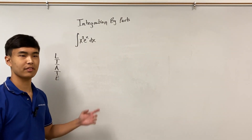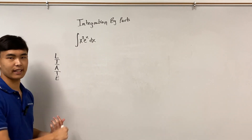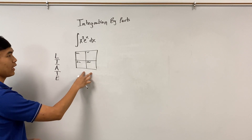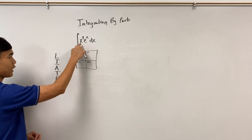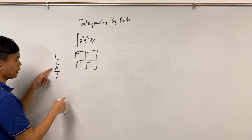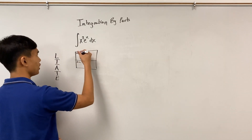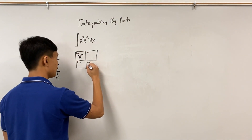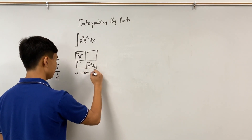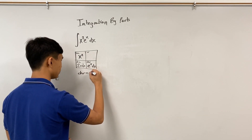Sometimes we have to do integration by parts more than once. Consider the integral of x² eˣ dx. We start by finding u and dv. x² is algebraic, and eˣ is exponential. Since x² ranks higher, u equals x² and dv equals eˣ dx. Differentiating u gives du equals 2x dx, and integrating eˣ dx gives v equals eˣ.